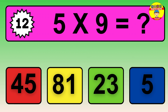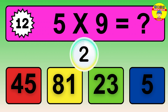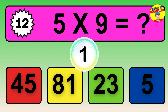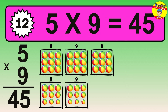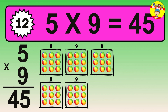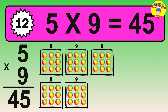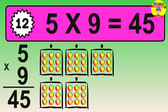Question 12. 5 times 9 equals what? The answer is 5 times 9 is 45. To calculate, we have 5 groups with 9 balls each one. So, how many balls do we have? 45 balls.